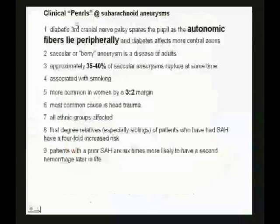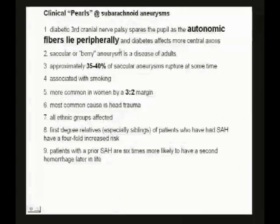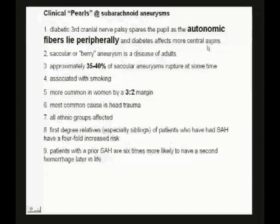Some clinical pearls of subarachnoid aneurysm. For boards: in diabetes, nerves are affected but autonomic fibers are spared, so you won't get a dilated pupil — the more central axons are affected, causing problems moving the eye. Thirty-five to forty percent of saccular aneurysms rupture at some time. Smoking is bad. It happens a bit more in women and affects all ethnic groups. Think about these clinical pearls you might see on national boards or on third-year wards.